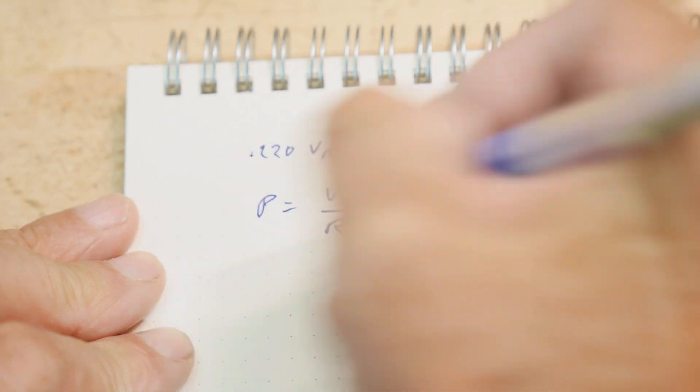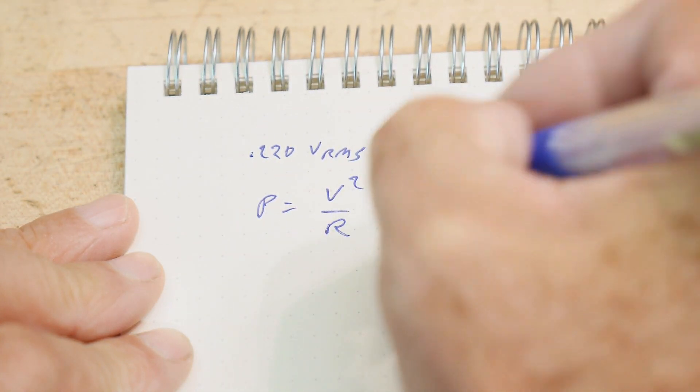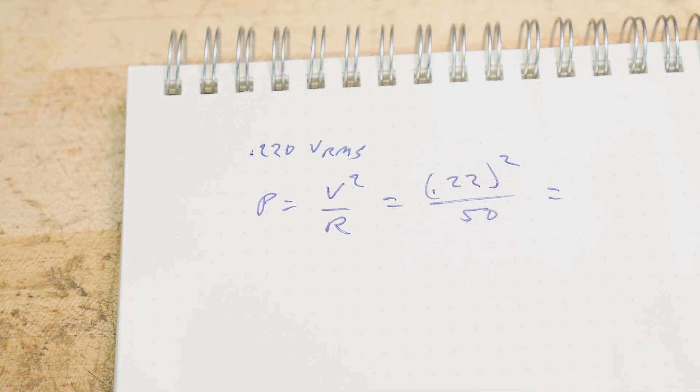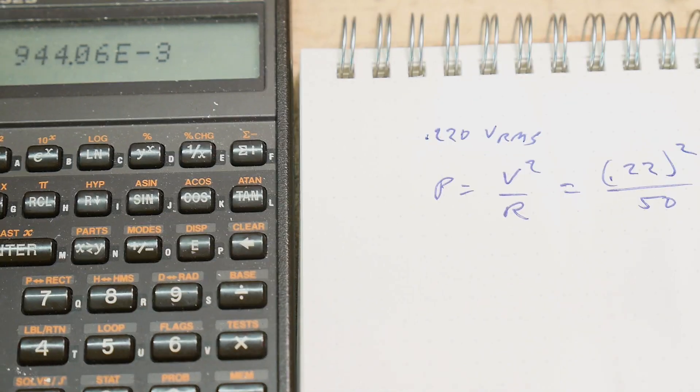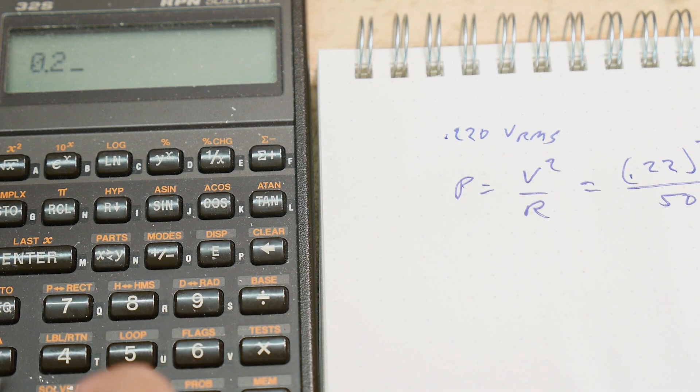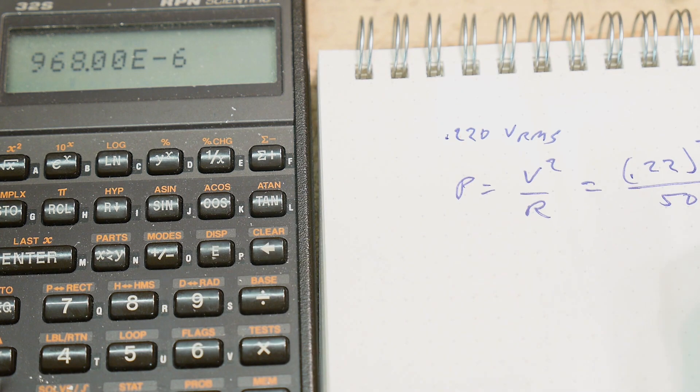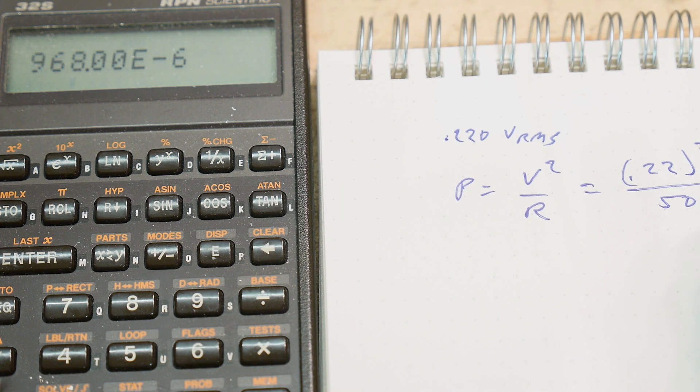So, power equals V squared over R equals 0.22 squared over 50 ohms. And a calculator 0.22 equals 0.968 milliwatts.